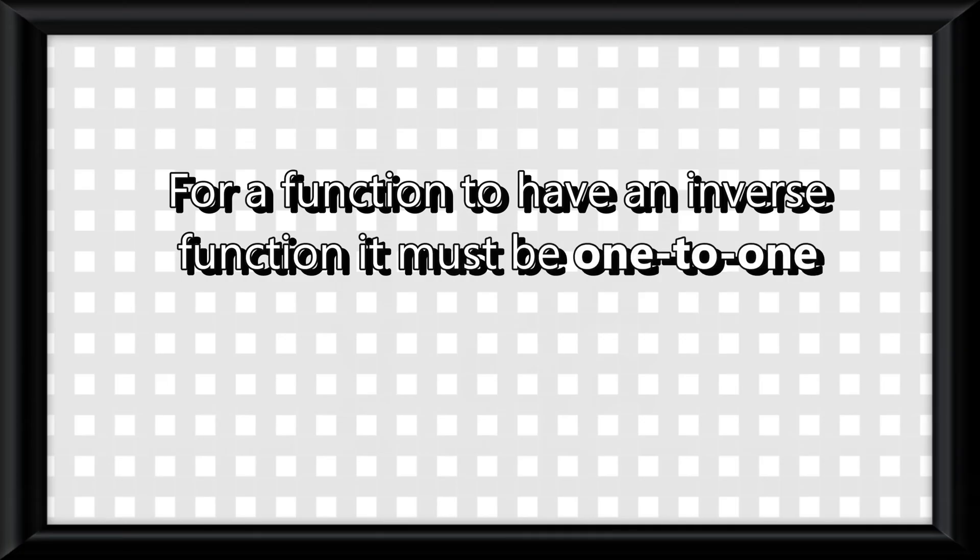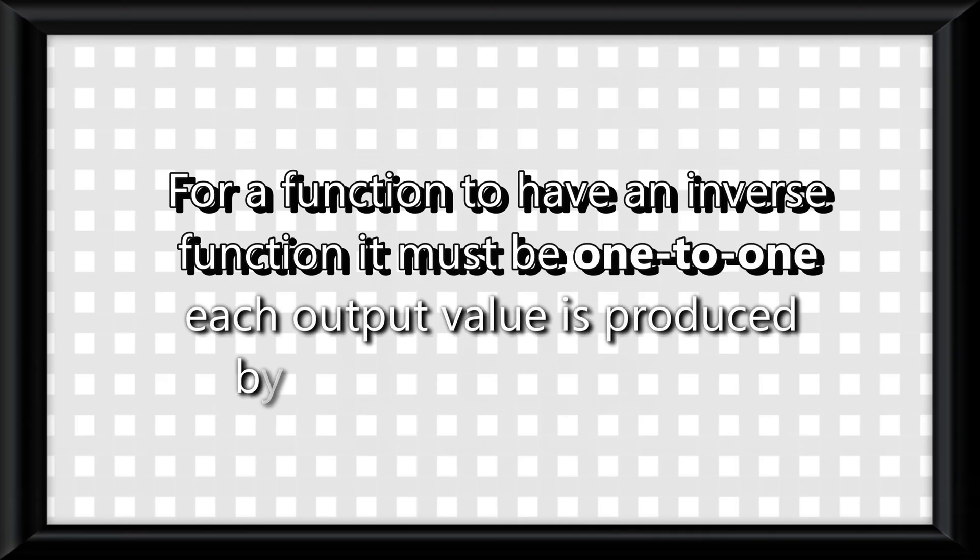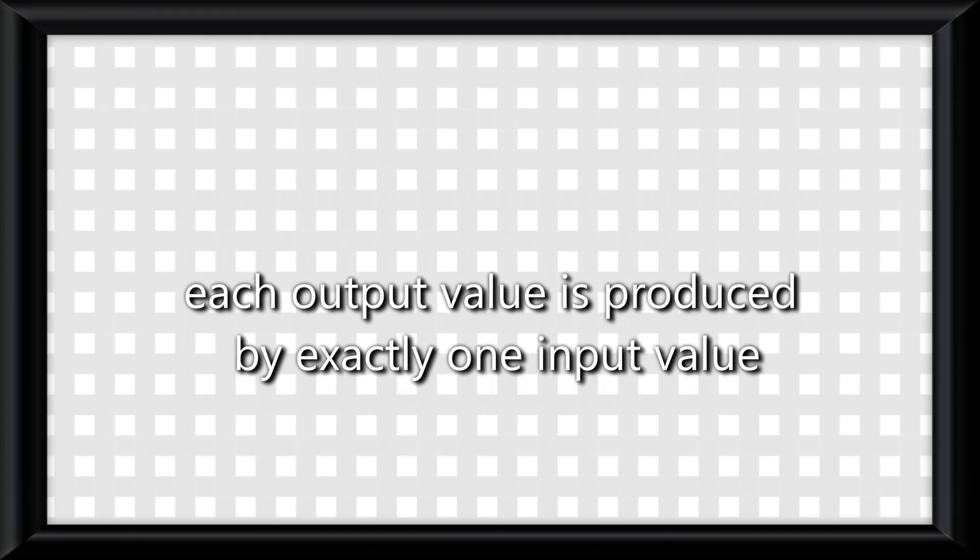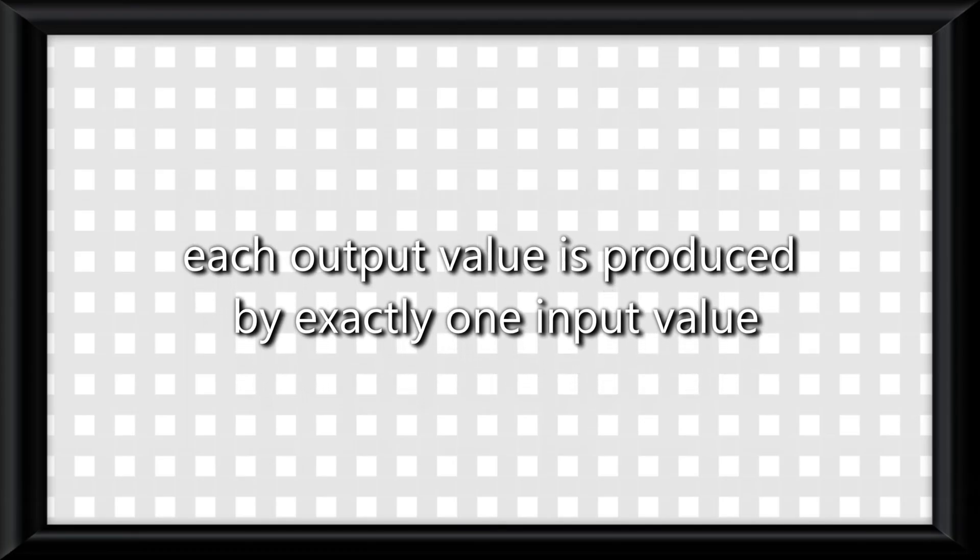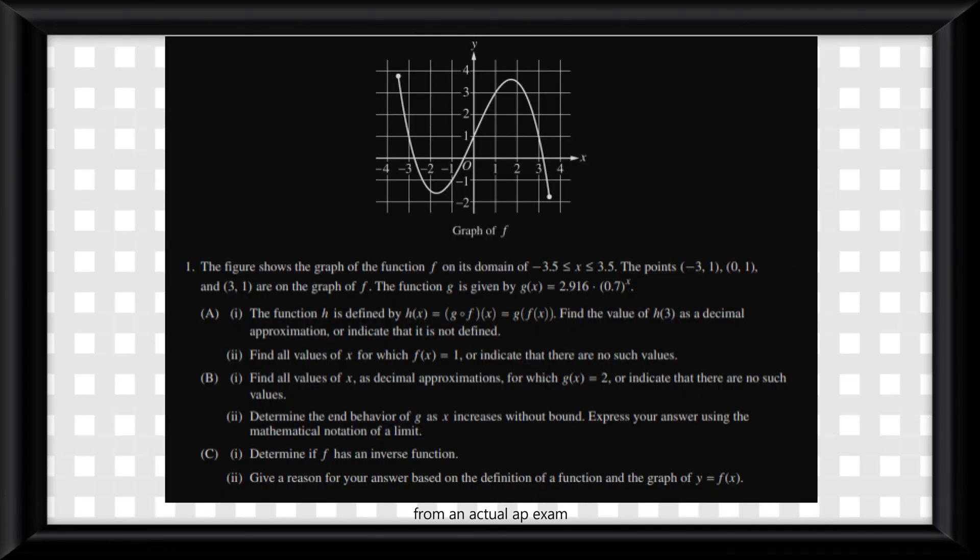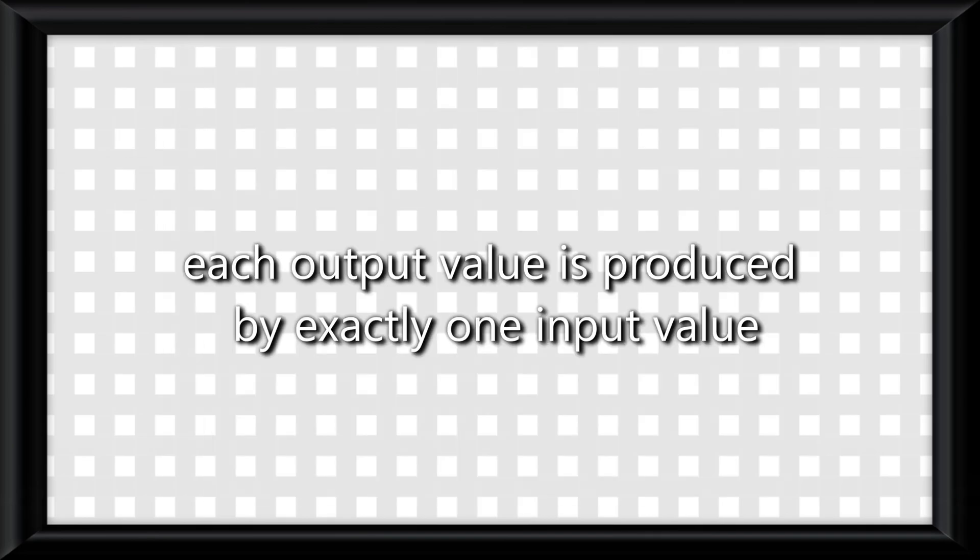For a function to have an inverse function, it must be 1 to 1, meaning each output value is produced by exactly one input value. And I don't think I can overstate the importance of that last line enough, because on the AP exam, you are guaranteed to be asked to explain why a function has or doesn't have an inverse, and this definition will give you full points.